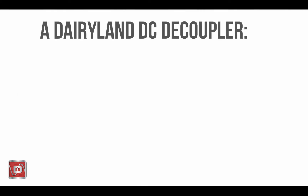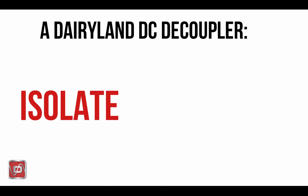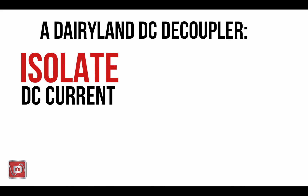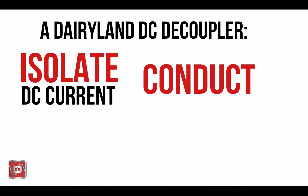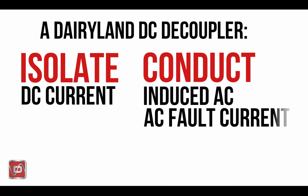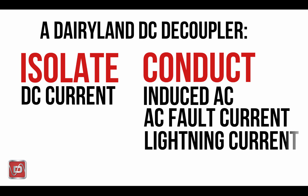So to recap, a Dairyland decoupler simultaneously isolates DC current and conducts induced AC, and then switches to a protective mode as needed to handle AC fault current and lightning. We'll look a little more at how decouplers are used in the next video. Thanks for joining — we'll see you soon.